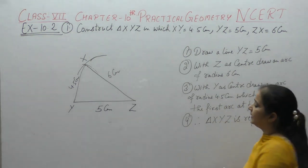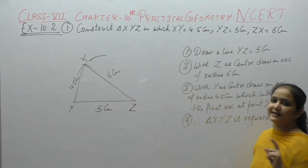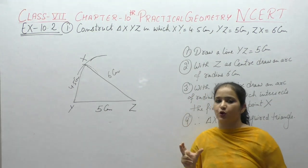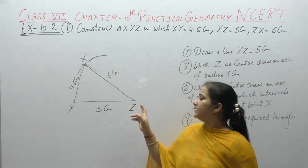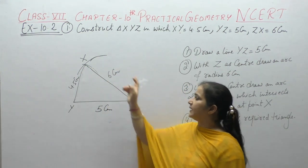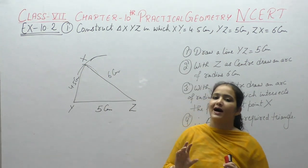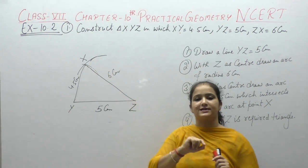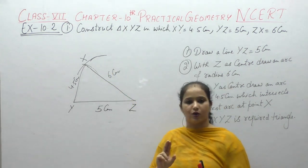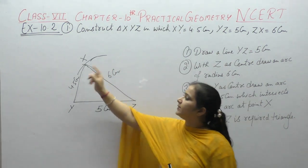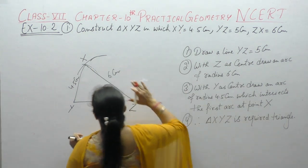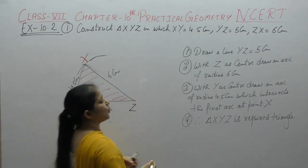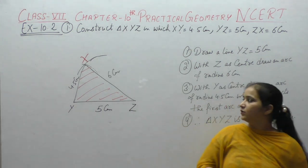Recap: पहले YZ = 5 cm की line scale से खींची। Y पे compass रखके 4.5 cm compass को open कीजिए, arc लगाइए। Z पे रखके 6 cm compass open करके दूसरी arc लगाइए। दोनों arcs किसी एक point पर intersect करेंगी — अगर intersect नहीं हो रही तो arcs को extend करो। जहाँ दोनों arcs intersect करें, उस point को X नाम दे दो। यही हमारी required triangle XYZ होगी। Clear — note कीजिए।